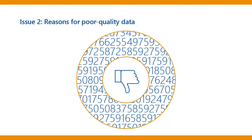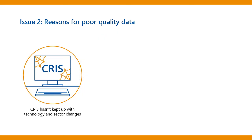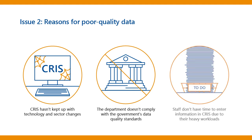There are many reasons why the Department's child protection data is poor quality, including CRIS is a legacy system that hasn't kept up with technology and sector changes, the Department doesn't comply with the government's data quality standards, and staff don't have time to enter information in CRIS due to their heavy workloads.